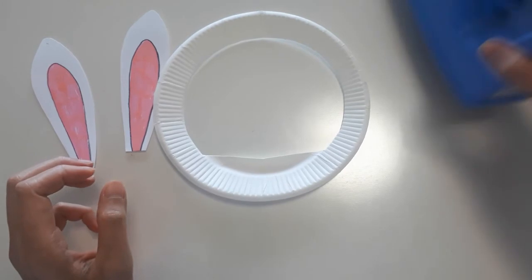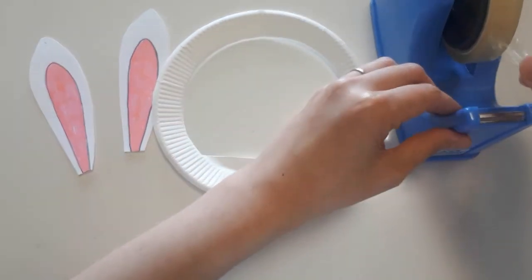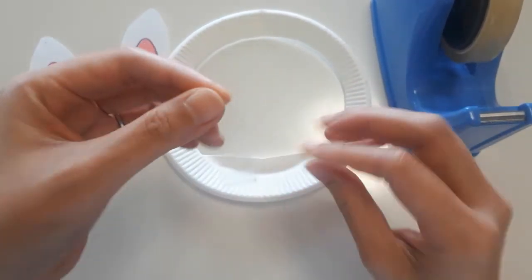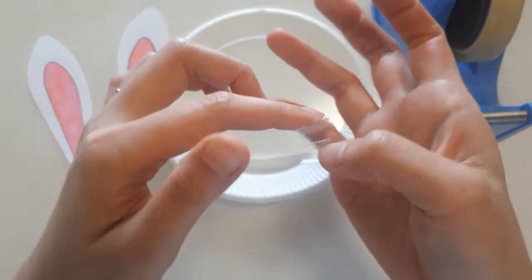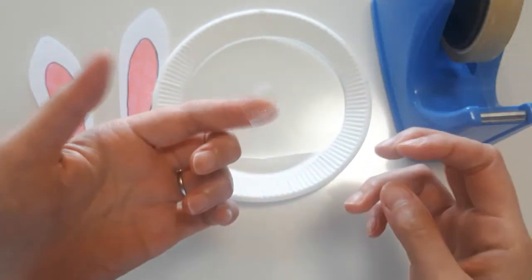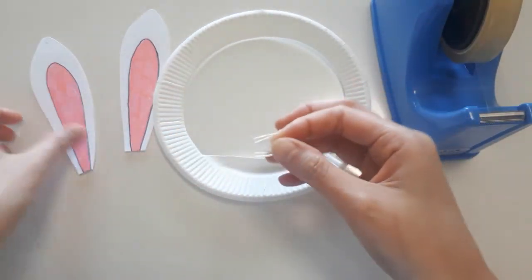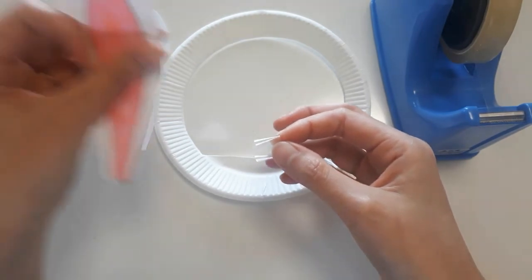And then you use tape. Okay. Fold the tape this way. You're going to get the tape like this. And then you put it on the back of the rabbit ear.